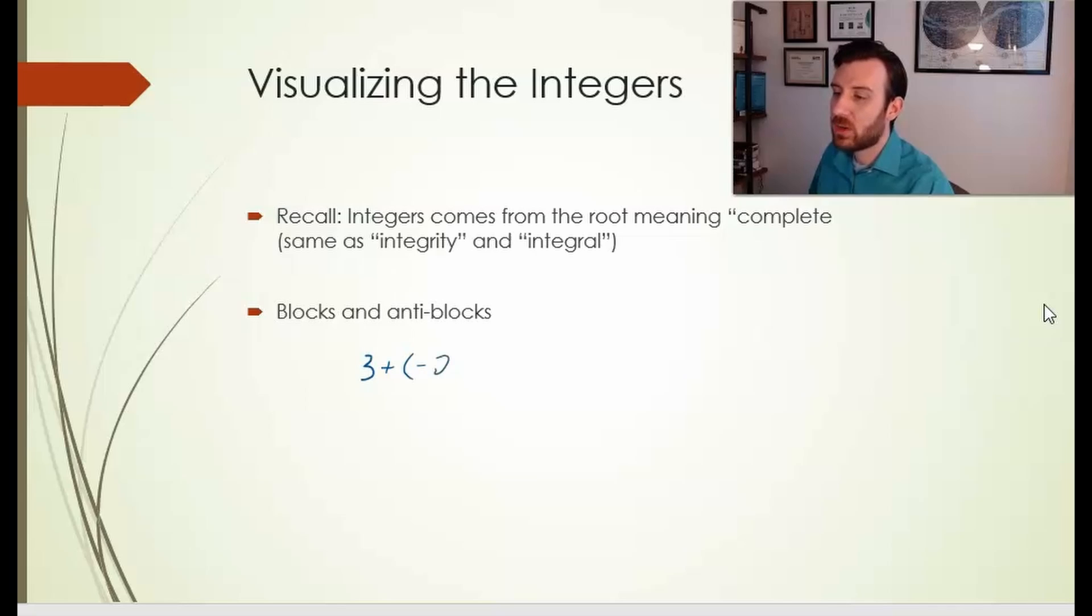if we want to represent 3 plus negative 2, we have 3 blocks and combine that with 2 anti-blocks. I'll shade these in to show they are the opposite of the unshaded regular blocks. These each represent minus 1, and these each represent positive 1.